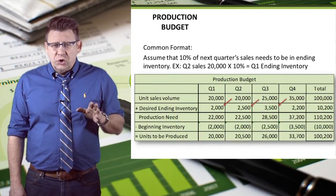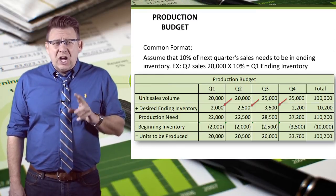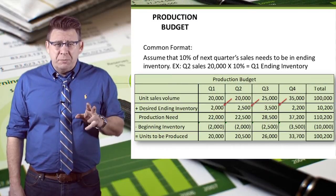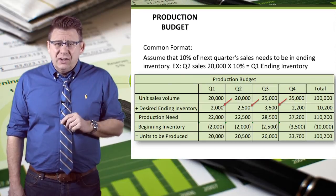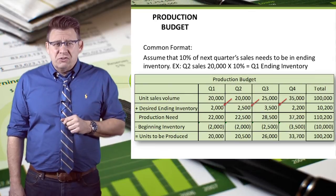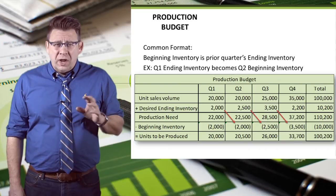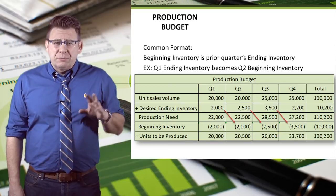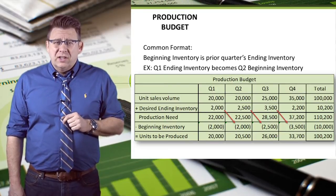Let's assume that 10% of the next quarter's sales needs to be on hand at the end of the quarter. So the desired ending inventory is 10% of the next quarter's sales, added to the current quarter's sales volume to arrive at production needs. Ending inventory from one quarter becomes the beginning inventory in the next quarter, so we subtract that from production needs to arrive at the units needed to be produced.